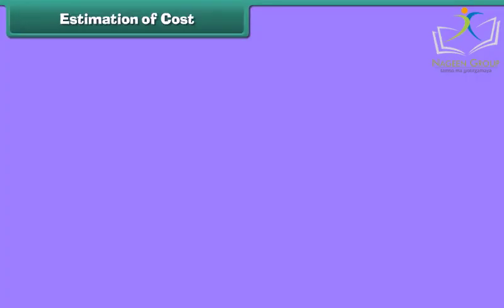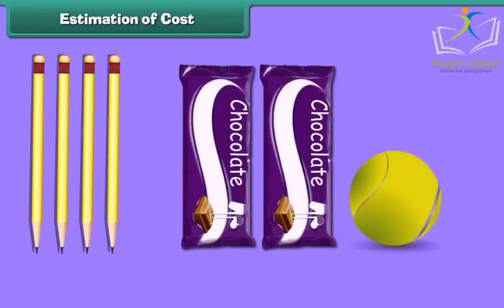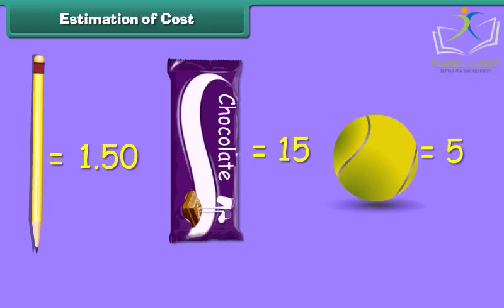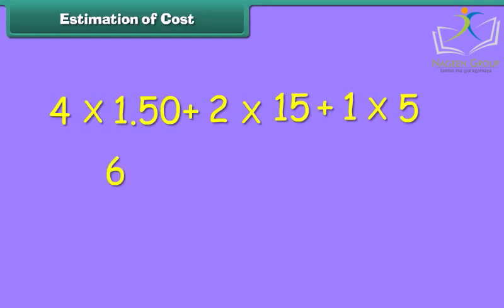Estimation of cost means calculating the total cost of different items. We understand it by taking an example. What will be the total cost of four pencils, two chocolates, and one tennis ball? The unit cost of a pencil is 1 rupee 50 paisa, unit cost of chocolate is rupees 15, and tennis ball is rupees 5. We calculate total cost: 4 × 1.50 plus 2 × 15 plus 1 × 5, which equals 6 plus 30 plus 5, amounting to rupees 41. Thus, this is the estimated cost.